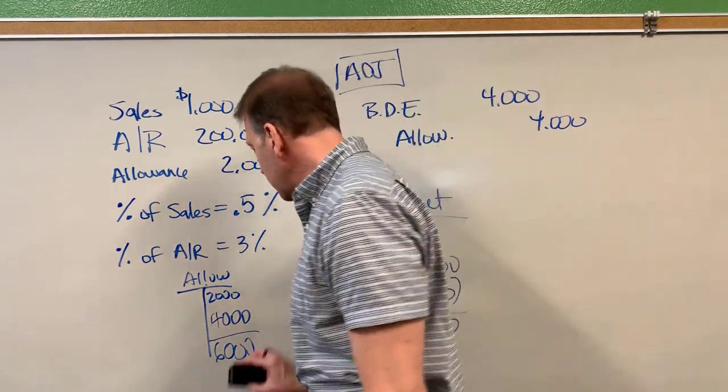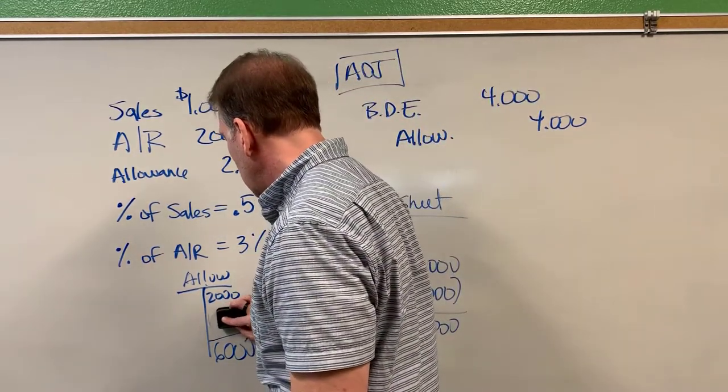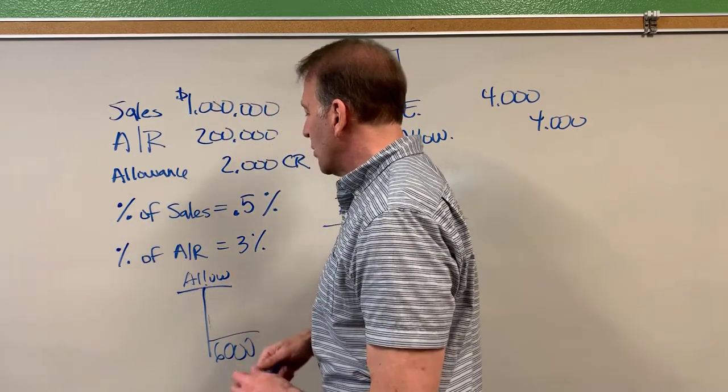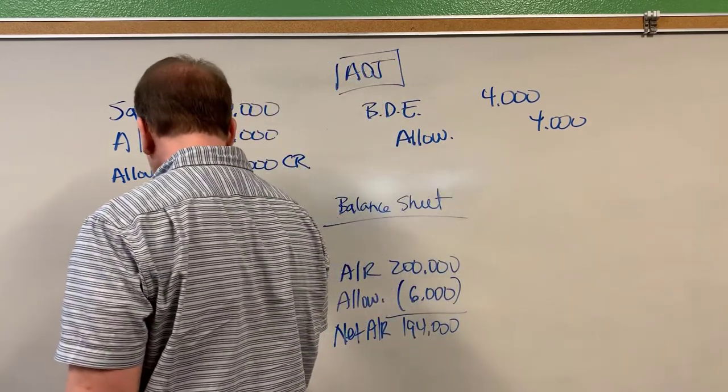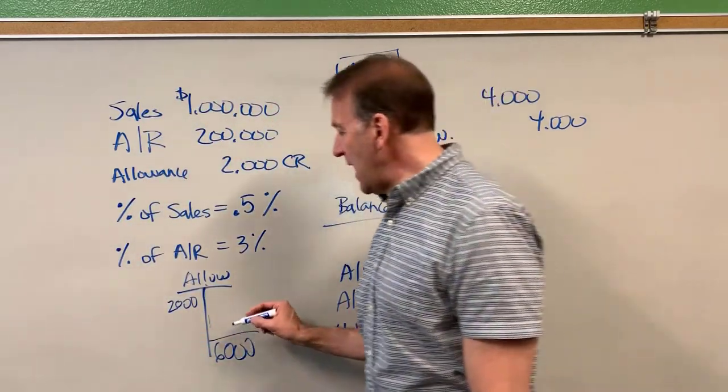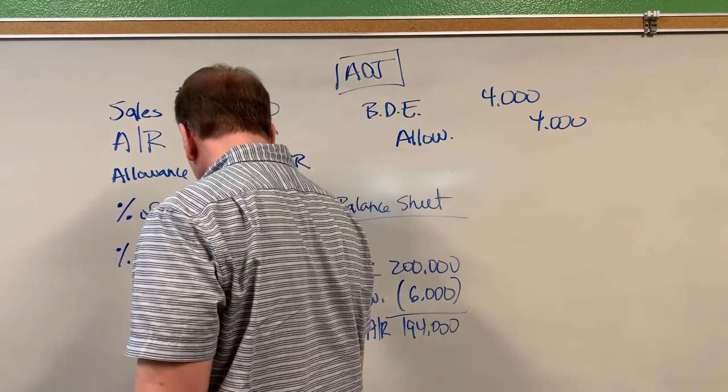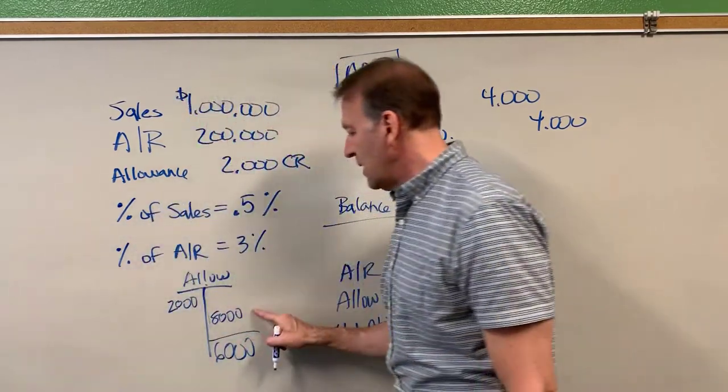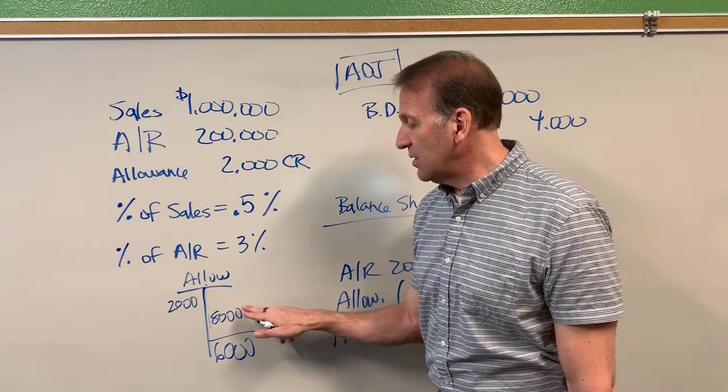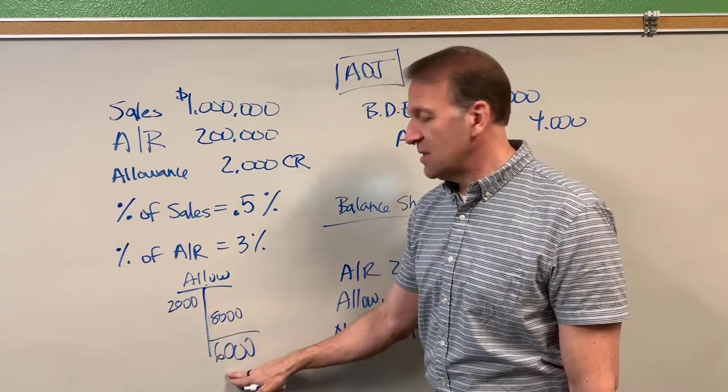Let's assume in this example now that our beginning balance wasn't a credit balance. If our beginning balance had been a debit balance then our adjustment would need to be a credit of eight thousand. Because a credit of eight thousand minus this two thousand would get us to our six thousand.